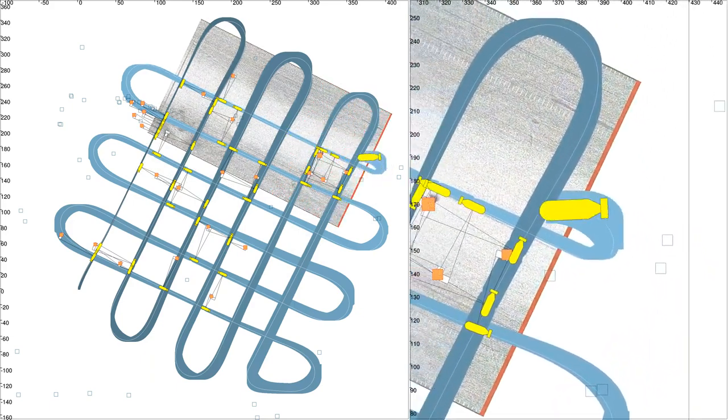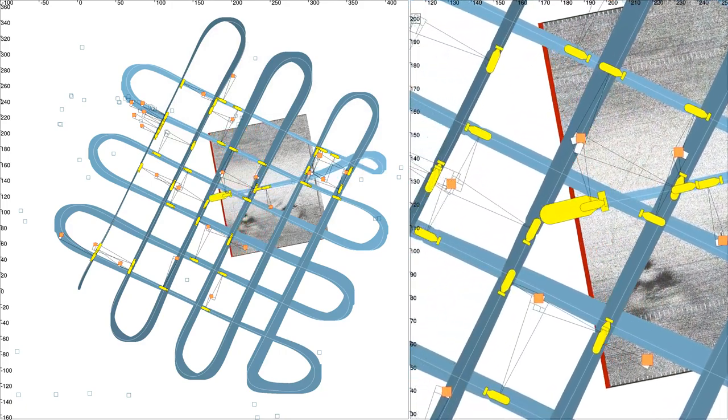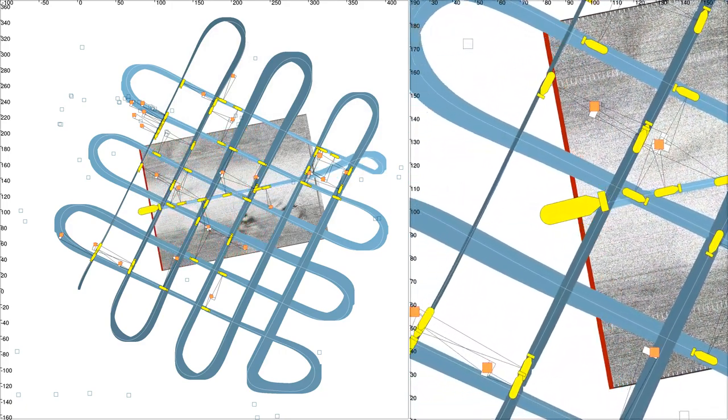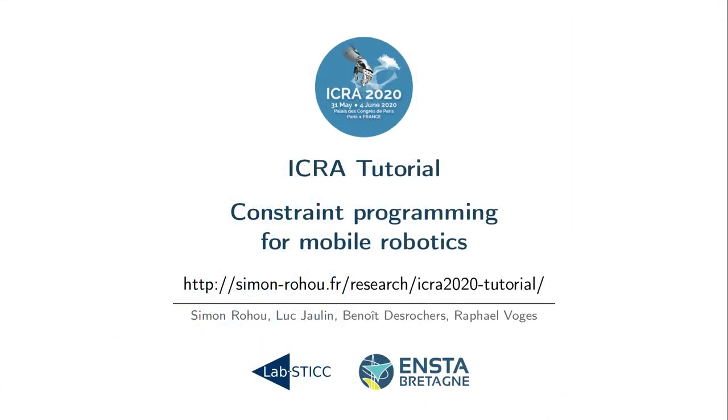So, thank you for watching. Please note that this video was the first overview of the full paper proposed for the conference. We propose, in addition, a dedicated tutorial for learning how to use constraint programming for mobile robotics. And, among other things, the tutorial explains, step by step, how to solve this localization problem.